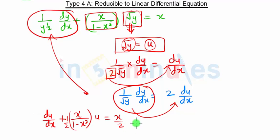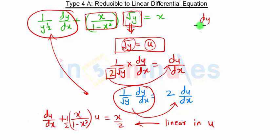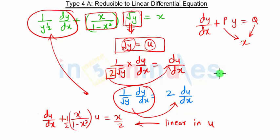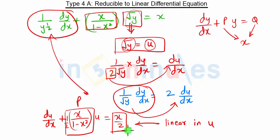This equation is now a linear equation in u, just as we used to have a linear equation in y of the form dy/dx + p·y = q, where p and q are functions of x. Here x/(2(1 − x²)) is our p and x/2 is our q, but it is linear in u.